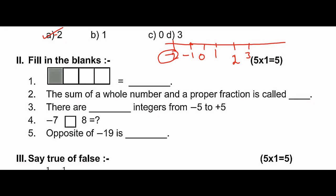There are 4 paths on the right, so the denominator is 4, giving 1 by 4. Now, one whole number plus one proper fraction - whole numbers are 0, 1, 2, 3. So 1 by 2: one plus one by two equals three by two. So what is an improper fraction? Three by two - that one is improper.